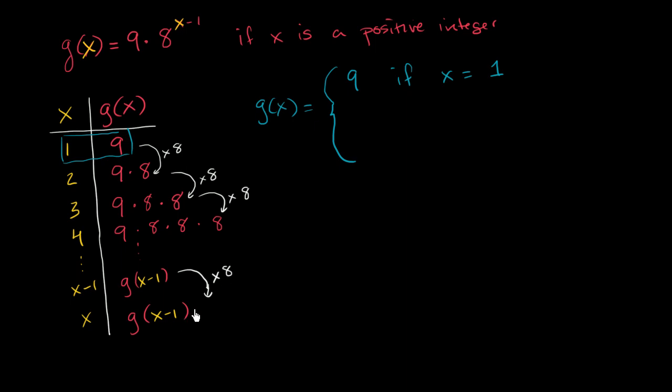So we could write that right here, times 8. So for any other x other than 1, g of x is equal to the previous entry, so it's g of x minus 1 times 8, if x is greater than 1, or x is an integer greater than 1.